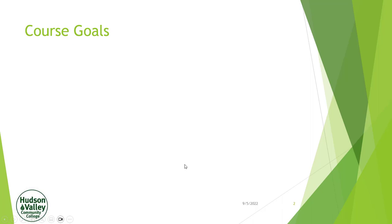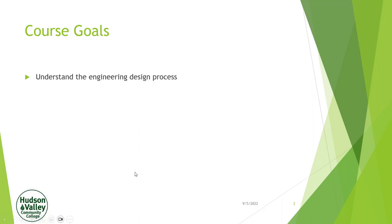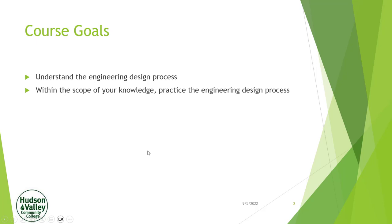What are our course goals? The first is to understand the engineering design process — not quite as easy as it sounds, because there is no one engineering design process. There are basic schools of thought, and we'll be going over some of those on Friday. In the end, you need to have a feel for how the process generically works, and we're going to do that by practicing it.